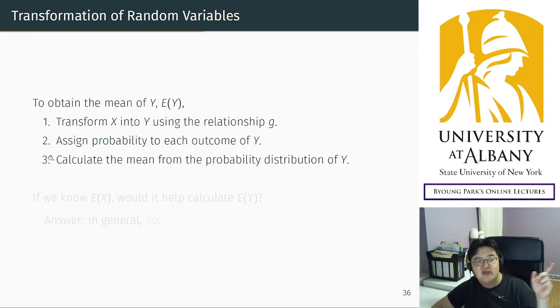But the probabilities are the same, so the second step is simple, easy, automatic. And the last step is to calculate the mean using the new random variable probability distribution table. This is what we did in the earlier slide.